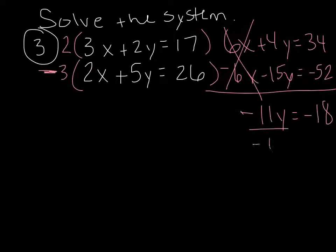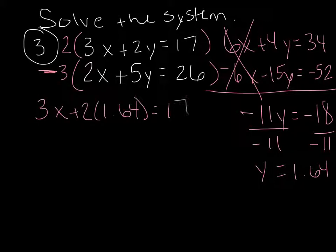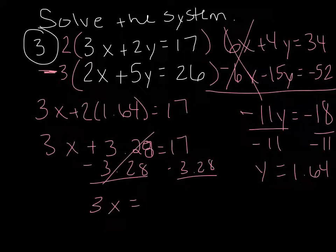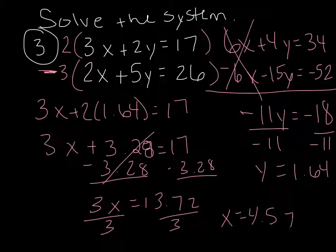Divide by negative 11, and you have y equals 1.64. You can round. So I'm going to plug 1.64 into the y spot. We have 3x plus 2 times 1.64 equals 17. So 3x plus 3.28 equals 17. Subtract the 3.28, you get 3x equals 13.72. Divide by 3, x equals 4.57. So it's okay to get decimals. Your answer is the x, which is 4.57, comma y, which is 1.64.